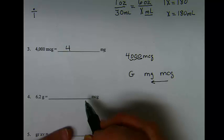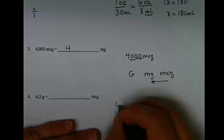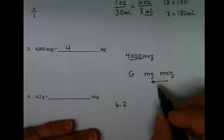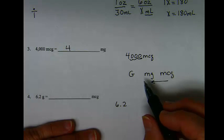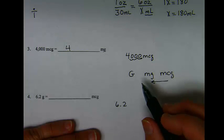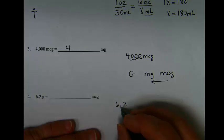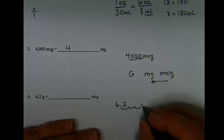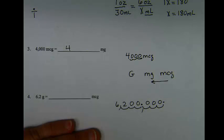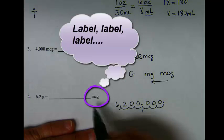In number 4 we have the same issue. We have 6.2 grams, but we're asked to convert to micrograms, which as you can see is two movements, but now to the right. So for each, that's 3 decimal places: 1, 2, 3 — that's grams to milligrams — and for micrograms, 1, 2, 3. So 6,200,000 would be our answer in micrograms.